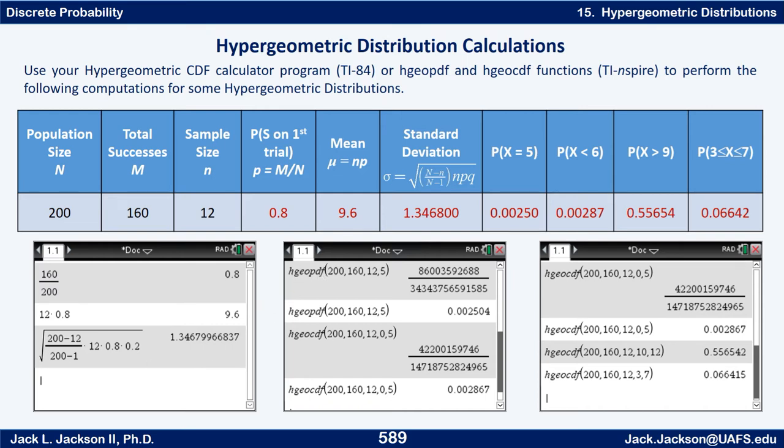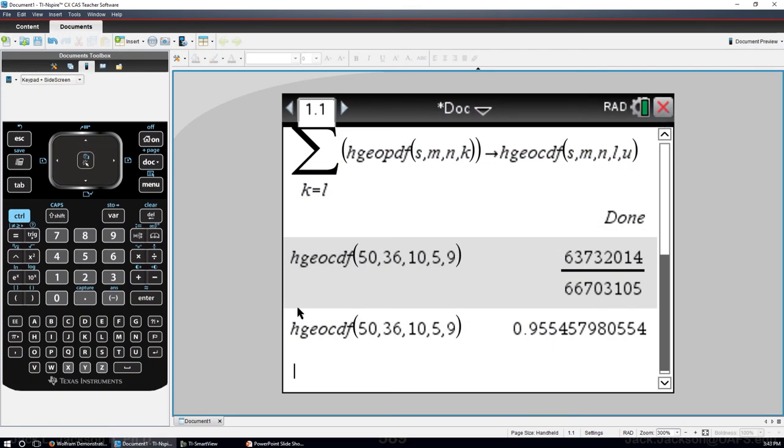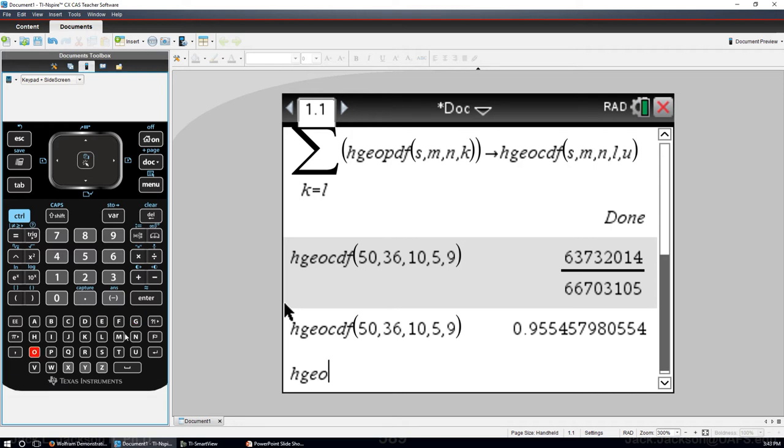So we type in hgopdf. Now actually let me show you there's two ways to get this. Once you have the function in there you can actually just type it in hgopdf and then go from there.